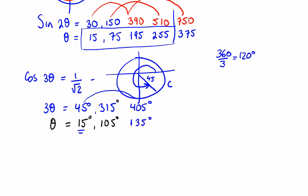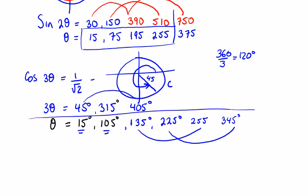So do the same here for the 105. The next solution will be 120 and 105, which is 225. We need to keep going here because it's 3 theta, we're going to have more than 4 solutions. So now we're adding my 120 to my 135 to get 255, and if I add 120 to 225, I'm going to get 345. And you can see there that I'm right up to 360, so I've actually got six solutions this time to this equation.